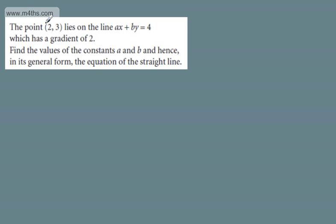In this video, we're going to do an extension question on coordinate geometry. We're told that point (2,3) lies on the line ax plus by equals 4, which has a gradient of 2. We're asked to find the values of the constants a and b and hence, in its general form, the equation of the straight line.